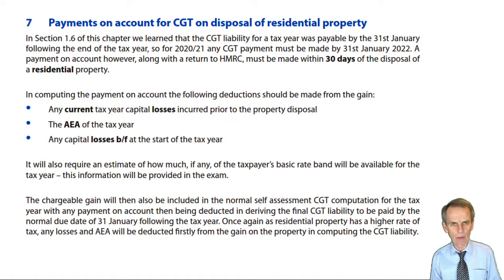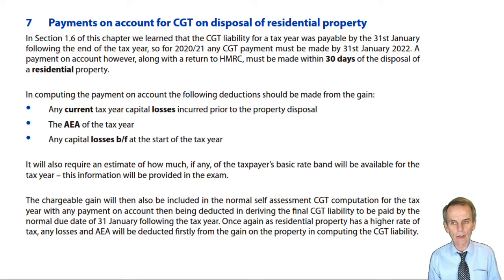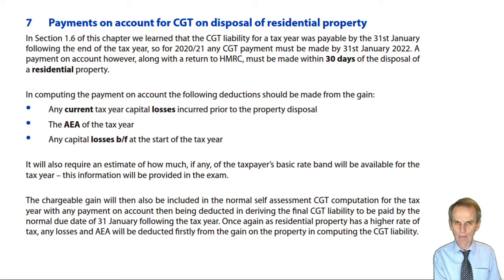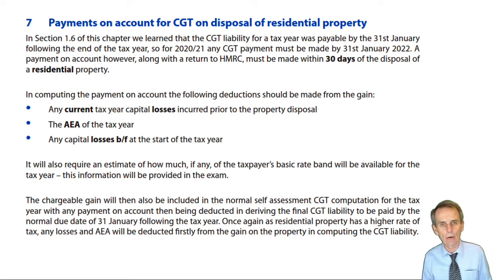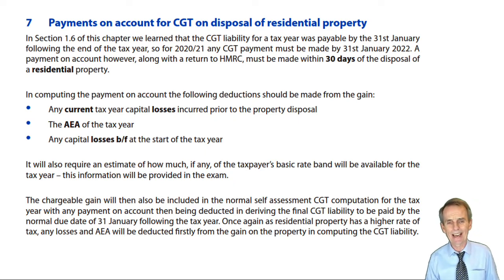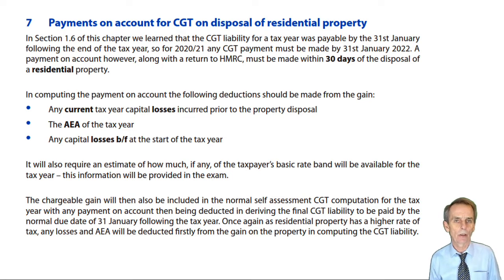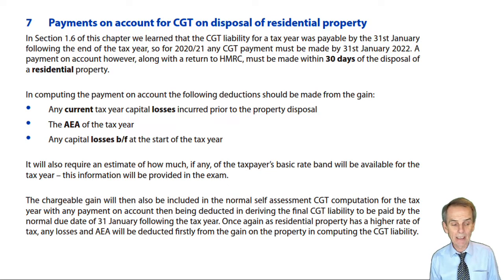When we looked at the tax rates applicable, we saw that instead of enjoying rates of 10% and 20% based on what's in the remaining basic rate band and what's above that in higher rate, we had higher rates applicable to taxable gains on the disposal of residential property: instead of 10% we had 18%, and instead of 20% we suffered a 28% rate.